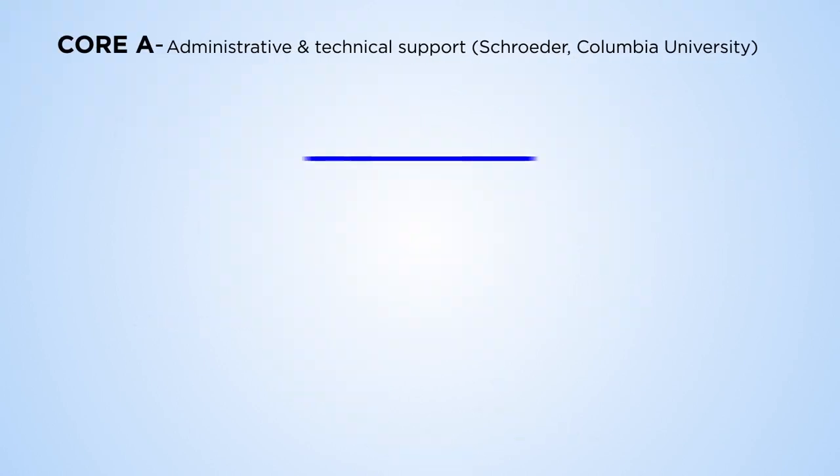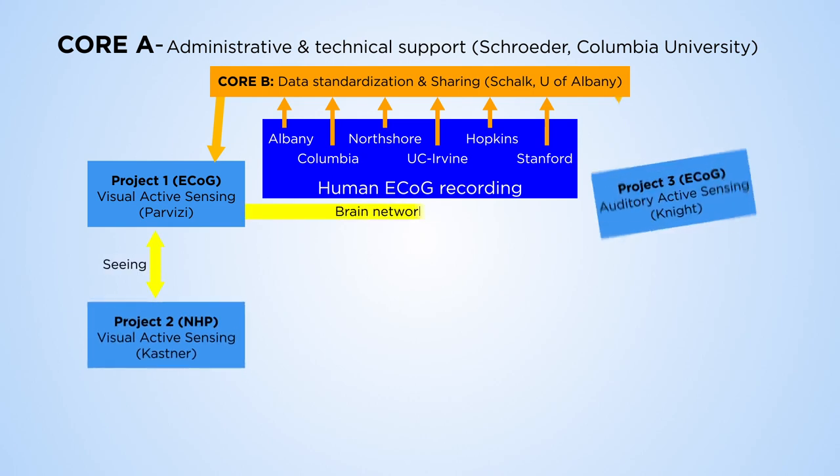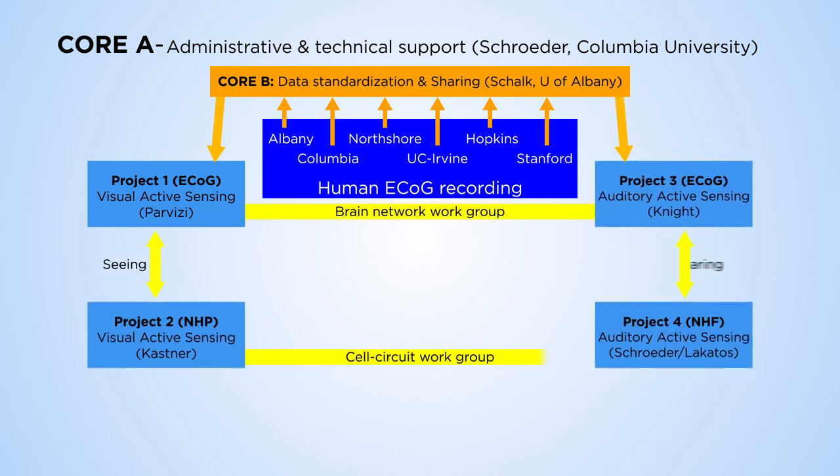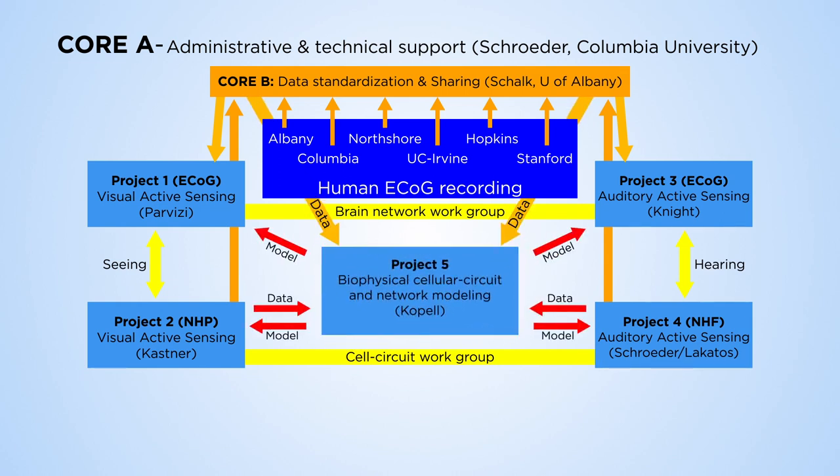Research divided into working groups focuses on cognitive processes that directly affect mental health. The center is linked by support cores, including the Administrative and Technical Core, Data Standardization and Sharing Core, and the Neuroimaging Core, each delivering vital infrastructure to the center.